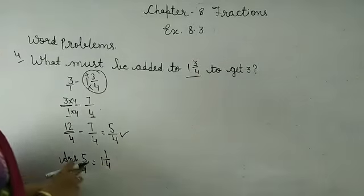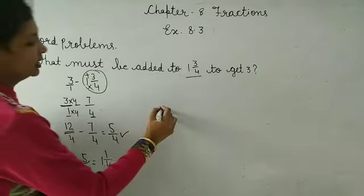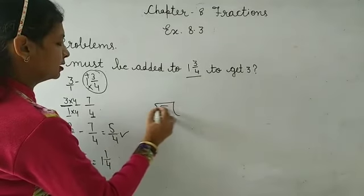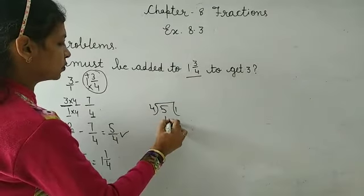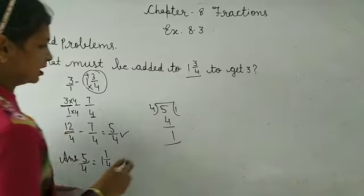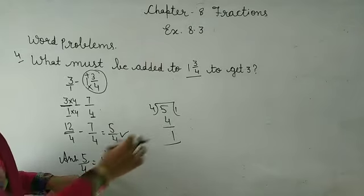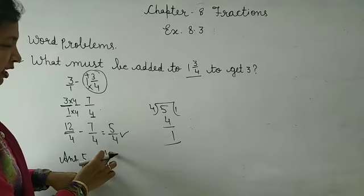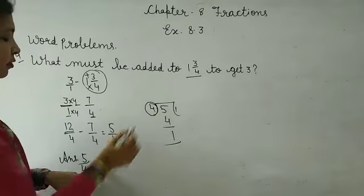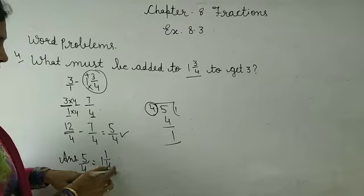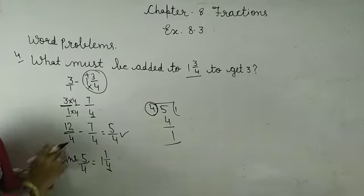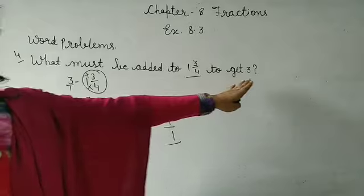Now we need to convert it. 5 divided by 4. 4 into 5 goes 1 time, remainder 1. The quotient becomes the whole number, numerator is the remainder, and denominator is the denominator. So 1 and 1 upon 4 must be added, then we get 3.